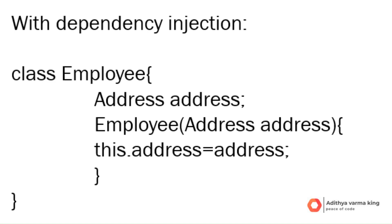Ease of maintenance: if there are changes to the Address class or its instantiation logic, you only need to modify the code where Address is instantiated — typically in the application configuration or a dependency injection container. In summary, loose coupling is achieved by externalizing the creation and management of dependencies, allowing for more flexible, maintainable, and testable code. The Employee class, by accepting Address through its constructor, follows the principle of dependency injection, contributing to loose coupling between components. In Spring Framework, the IoC container is responsible for injecting the dependency.